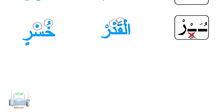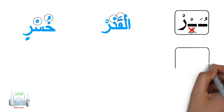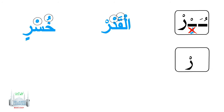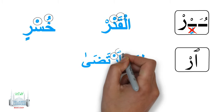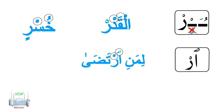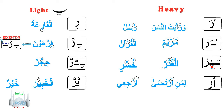These are difficult to pronounce. If the Ra has a sukoon and the letter before it is a Hamzatul Wasil, it is pronounced heavy no matter what vowel comes before it. In this example, we see a Ra sakin, and before it there is a Hamzatul Wasil. It reads as لِمَا ارْتَدَى. Here it reads إِرْجِعِ.